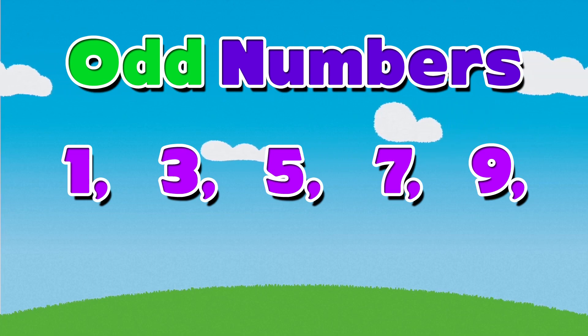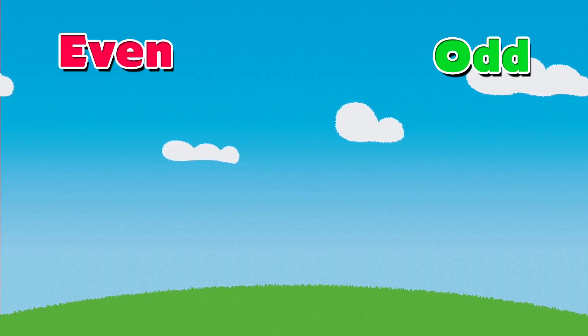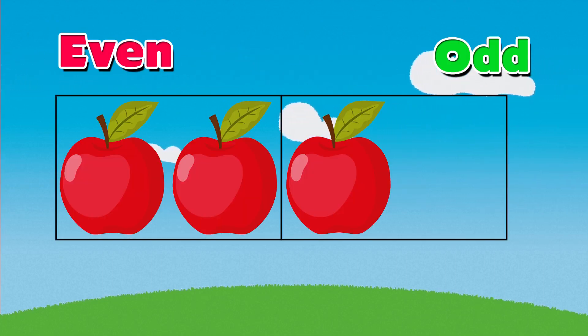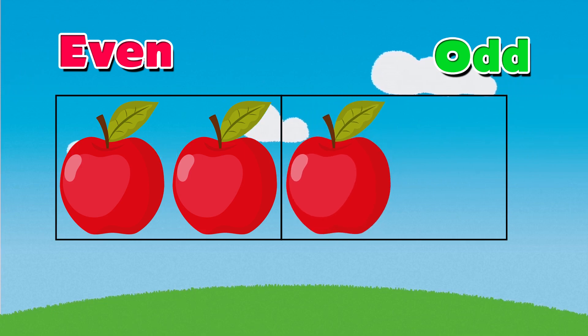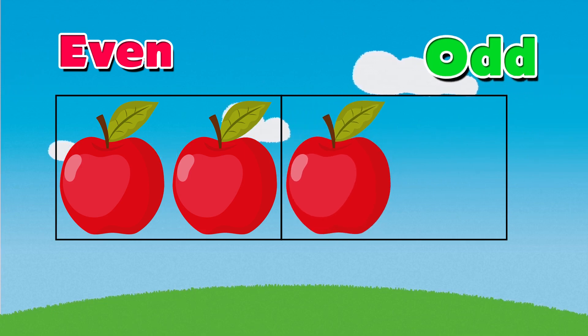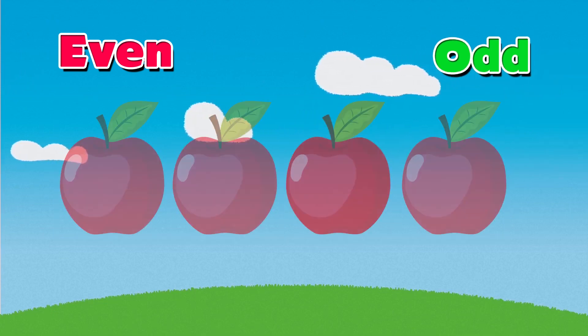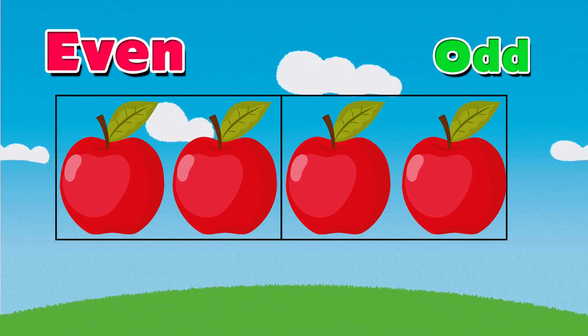One way you can see if a number is even or odd is to try grouping it into twos. If there is one left over, then it is an odd number. If there are no extra numbers, then it is even.